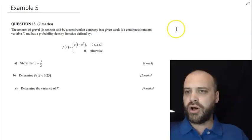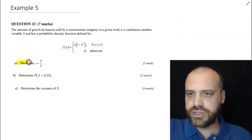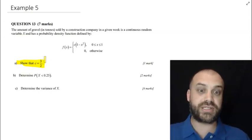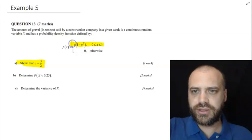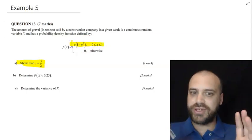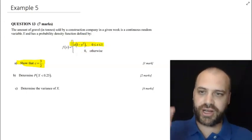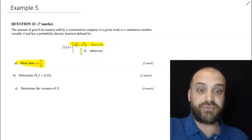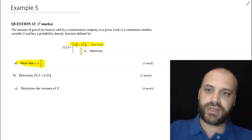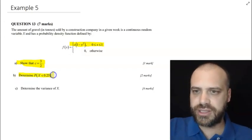All right obviously I'm going to start at part A. Show that C equals three over two. C? What's C? Oh there's C. I have all the information I need now. Right I need to know that I need to show that C equals three over two. I can see that this is a probability density function. I can figure out C. Determine the probability that this is this.